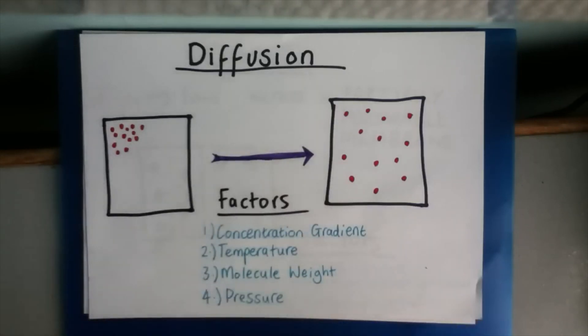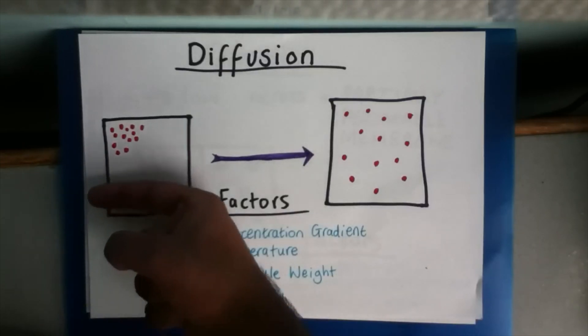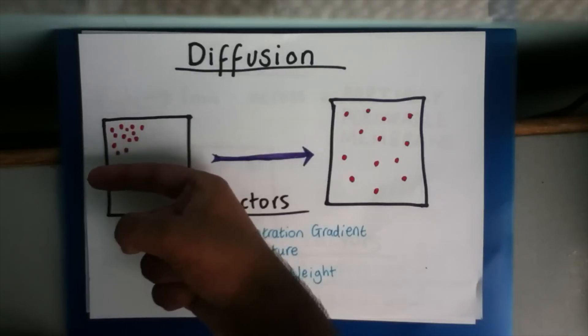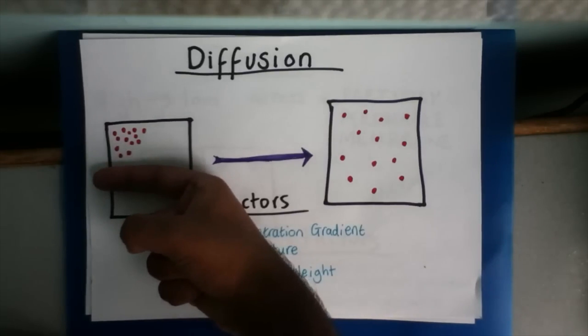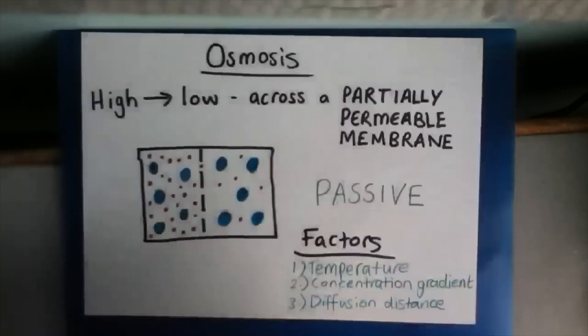And the fourth is pressure. When you decrease the size of this container, let's say to here, what will happen is the molecules don't have to spread out as far as before. So, they will spread and fill out this smaller container a lot quicker. This is how pressure works when affecting diffusion.